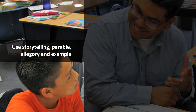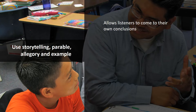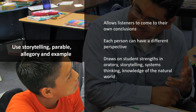Also mirroring common traditional Native American educational practices, consider how you can incorporate storytelling, parable, allegory, and example in your instruction. These techniques provide another way for students to build their understanding and position learning within a larger context. The use of these techniques allows listeners to see relationships and come to their own conclusions, supporting the belief that each person can have a different perspective. Students from traditional Native communities may come to school with strong oratory and storytelling skills, and strengths in systems thinking and knowledge of the natural world, which help them both learn from and actively participate in these instructional strategies.